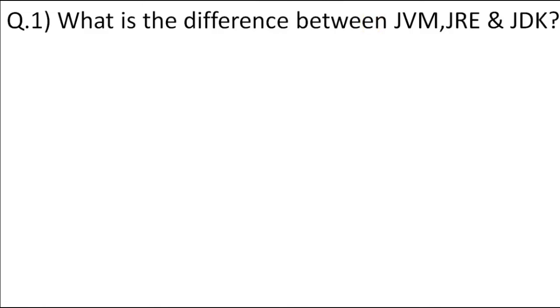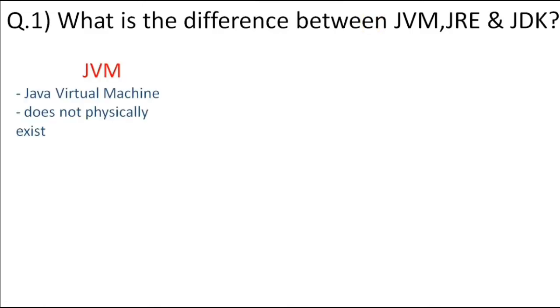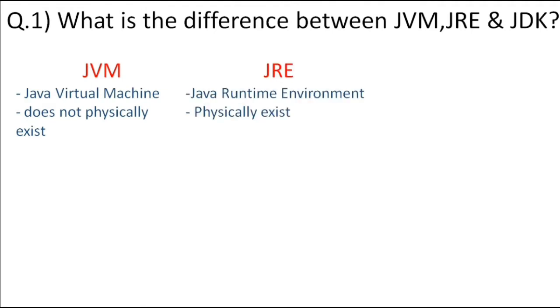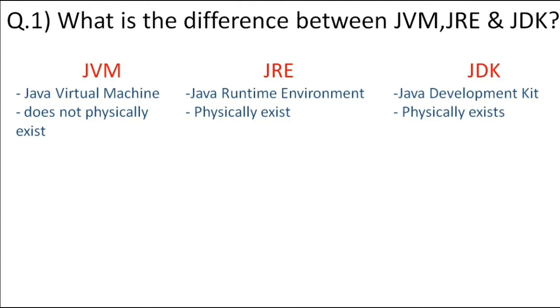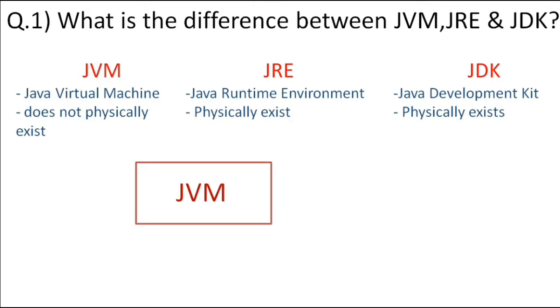The first question is: what is the difference between JVM, JRE, and JDK? First, let's see what they stand for. JVM stands for Java Virtual Machine, JRE stands for Java Runtime Environment, and JDK stands for Java Development Kit. Now let's see how they exactly look and what the exact difference between them is.